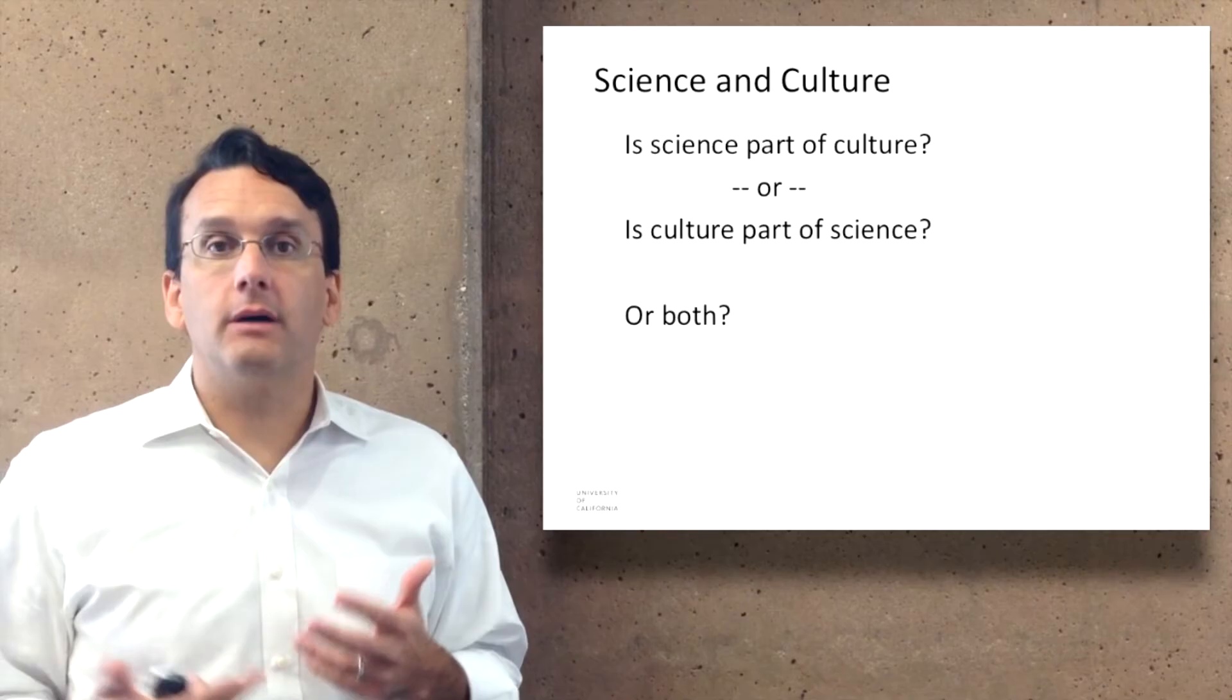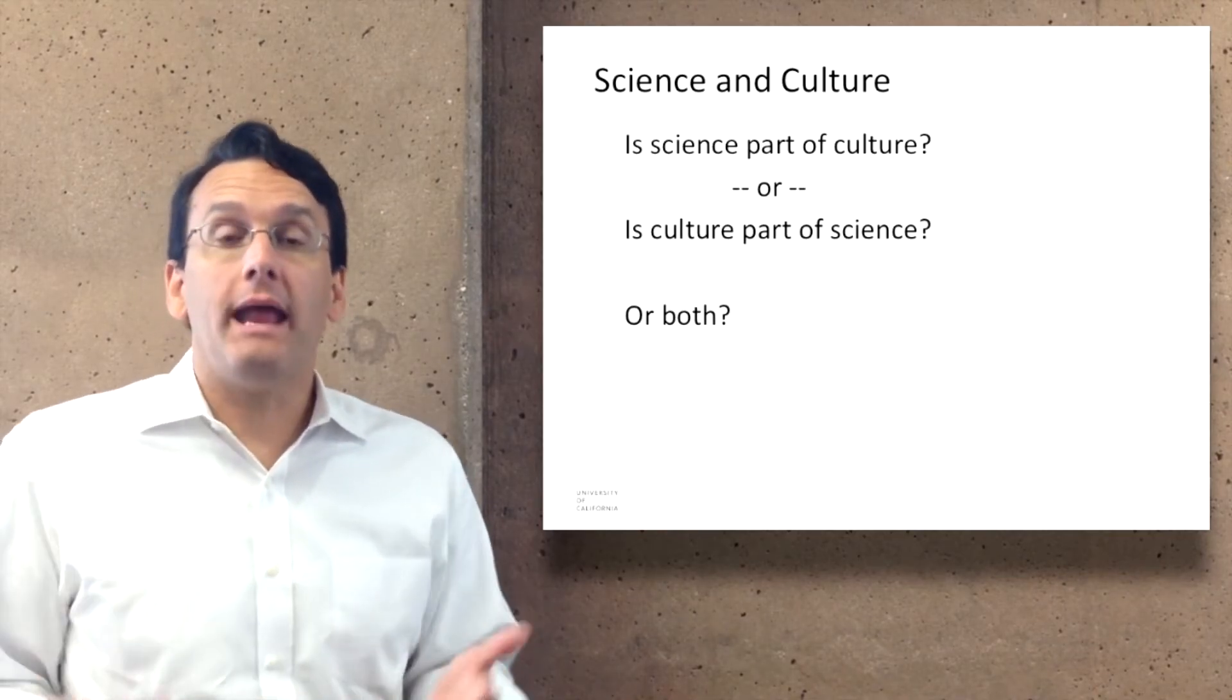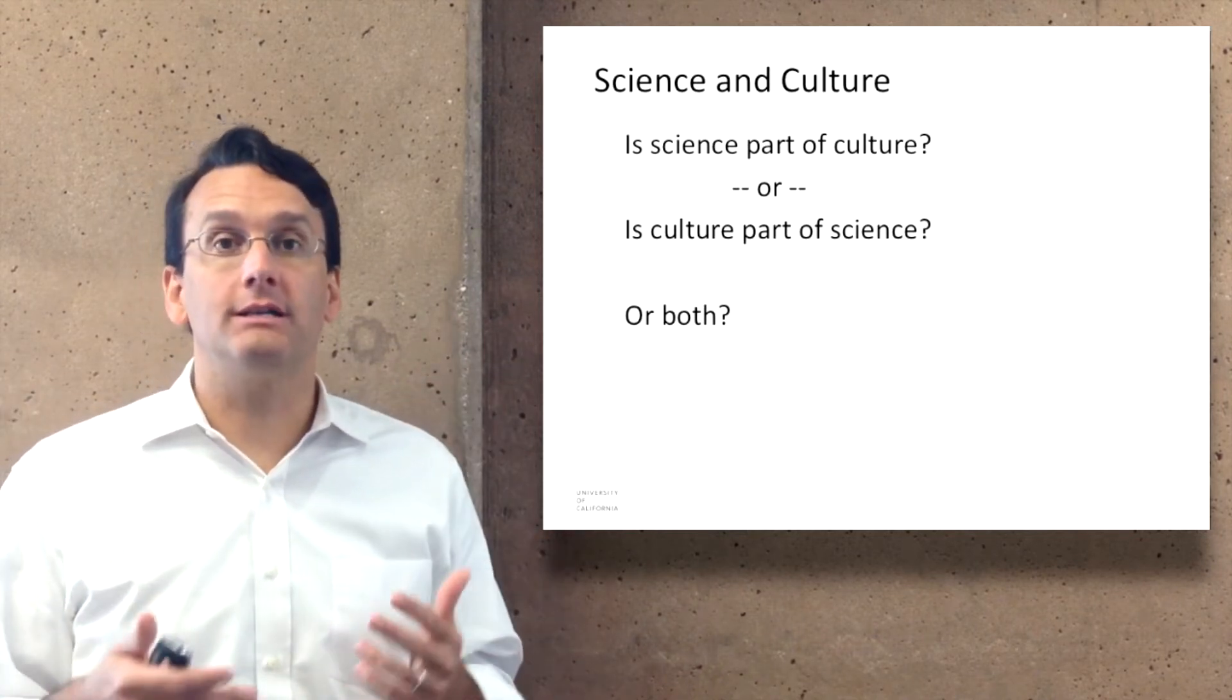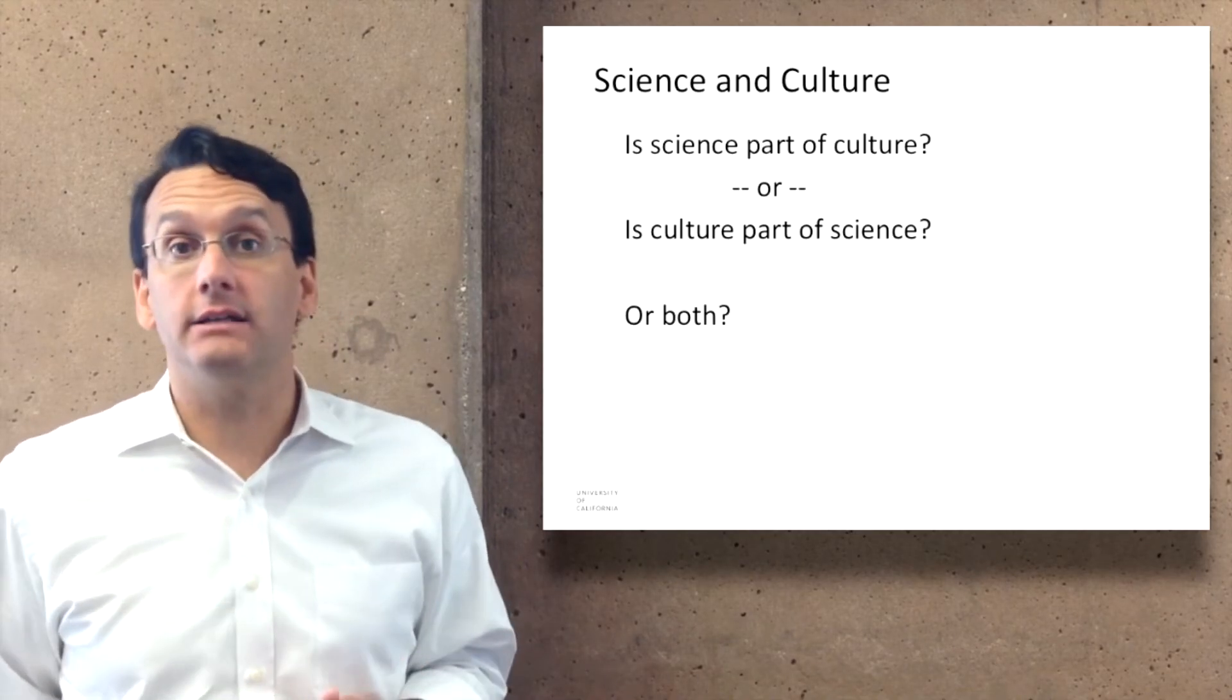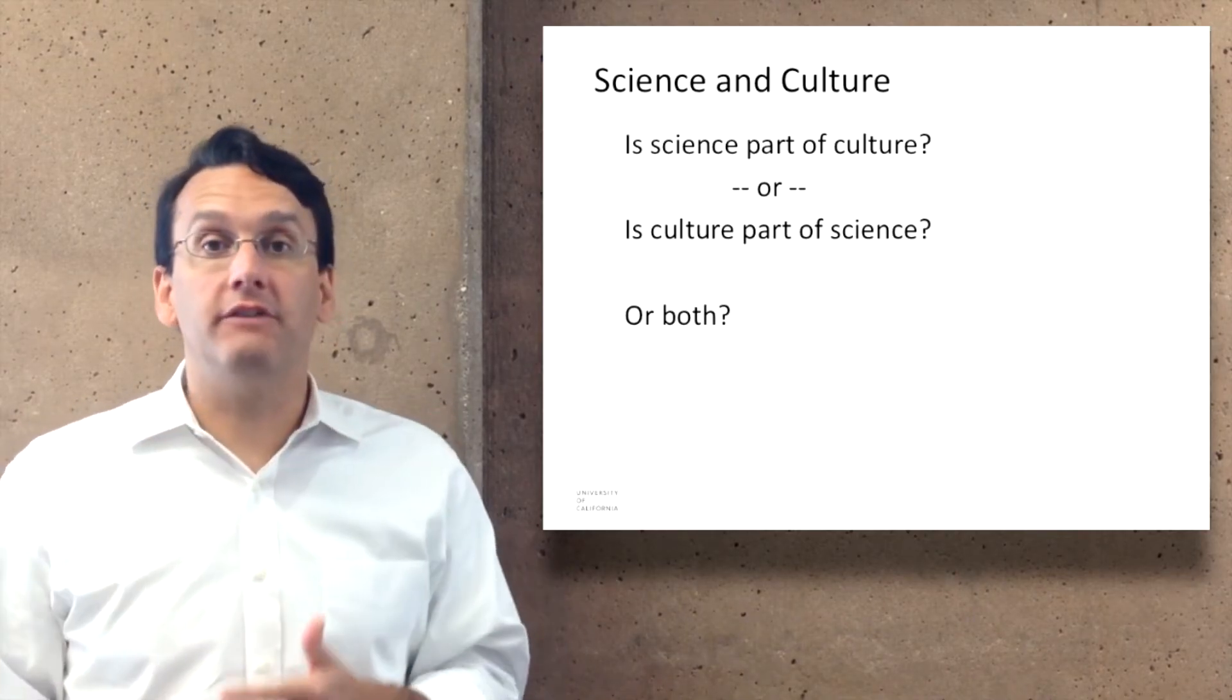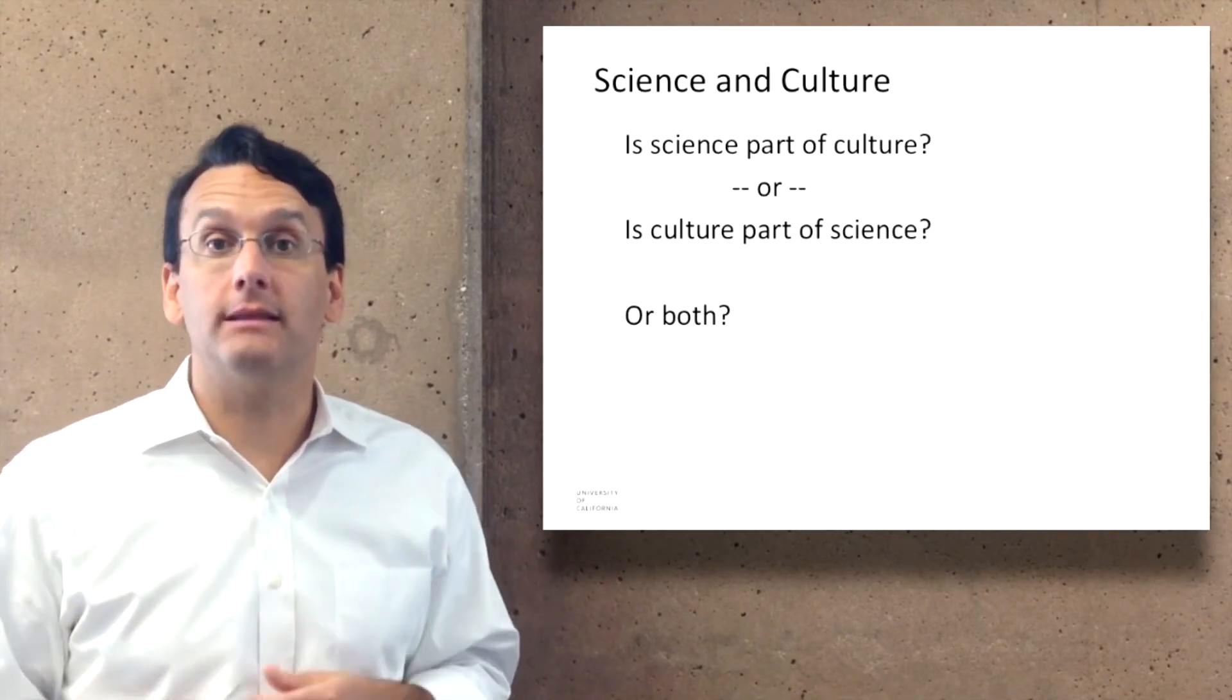A question that often comes up is the relationship between science and culture. On the one hand, you could say science is part of culture, that we have this culture that surrounds us and one of the aspects of that culture is the idea of science. On the other hand, you could think that culture is part of science, that when you have a scientific approach you can study culture and learn about it using scientific methods.